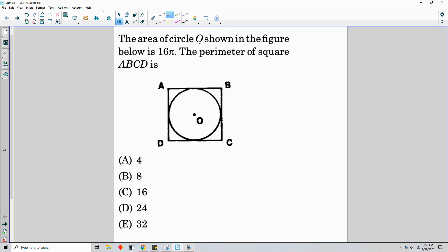Okay, the area of circle O, shown in the figure below, is 16π. So there's our given.